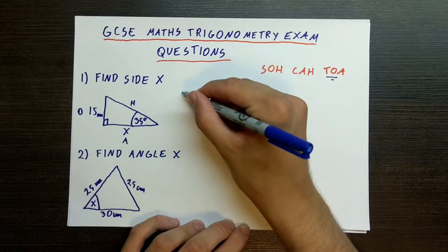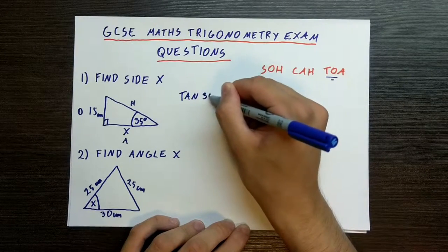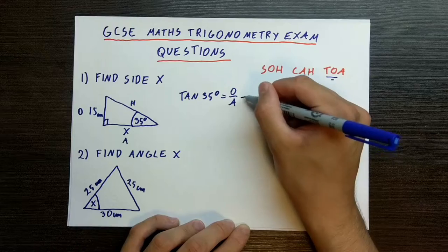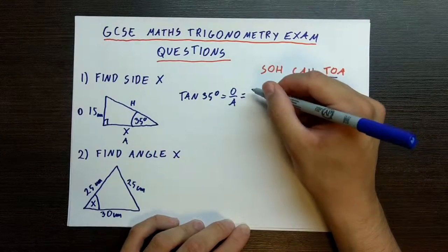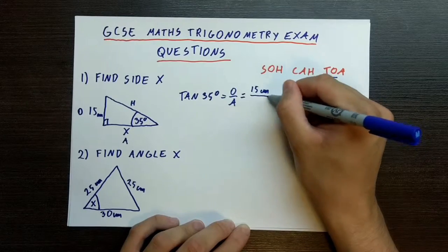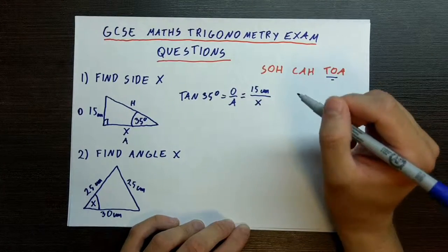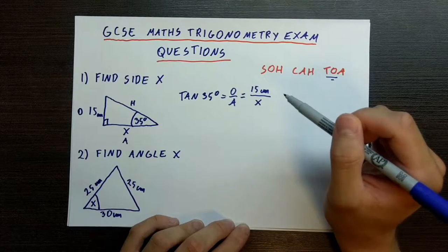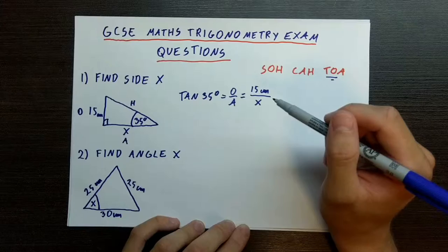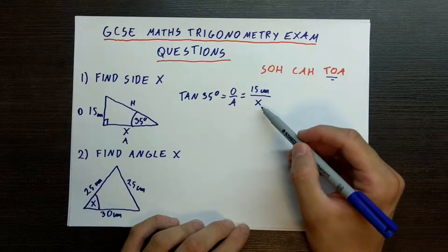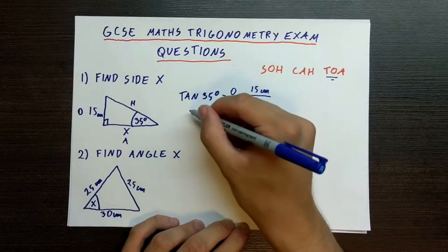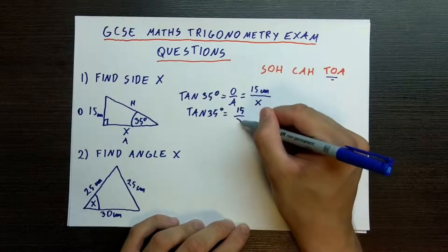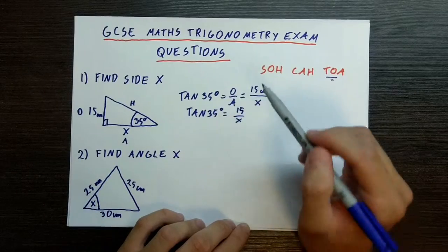So now let's write it out. Tan of 35 degrees is equal to opposite over adjacent. Now let's plug the numbers in, so it is equal to 15 centimeters divided by x. What do we do now? Well, we need to isolate that x. And how are we going to do it? We need to multiply — I will rewrite this equation — tan 35 degrees, which is equal to 15 over x. So we have only two terms here.